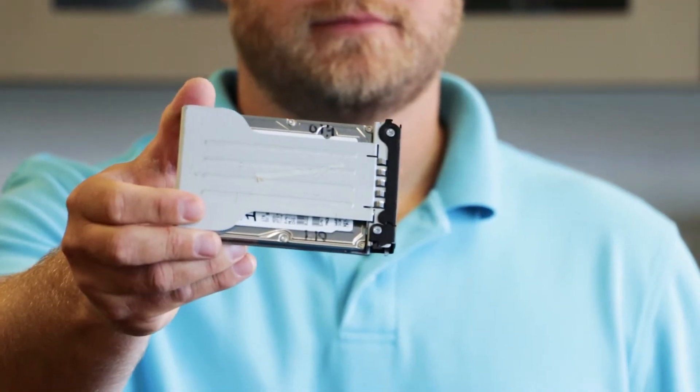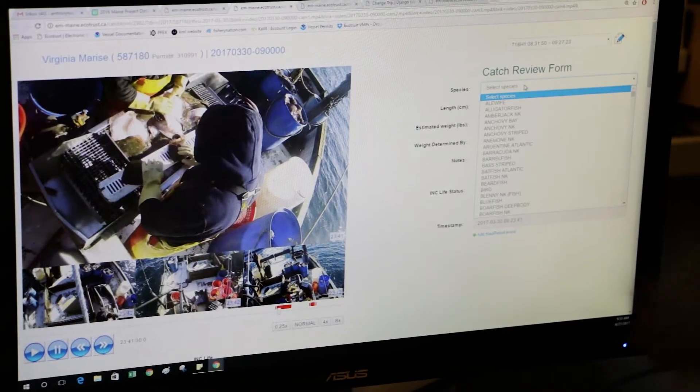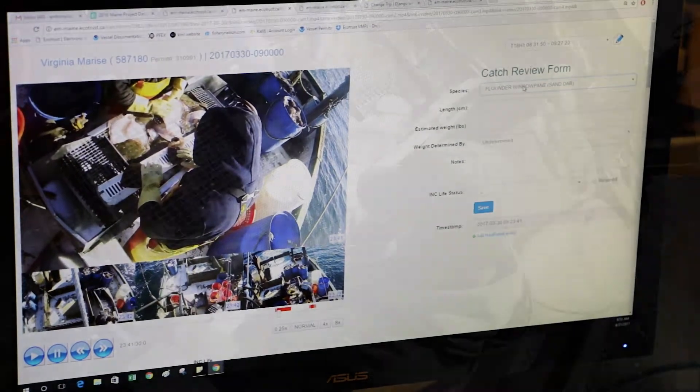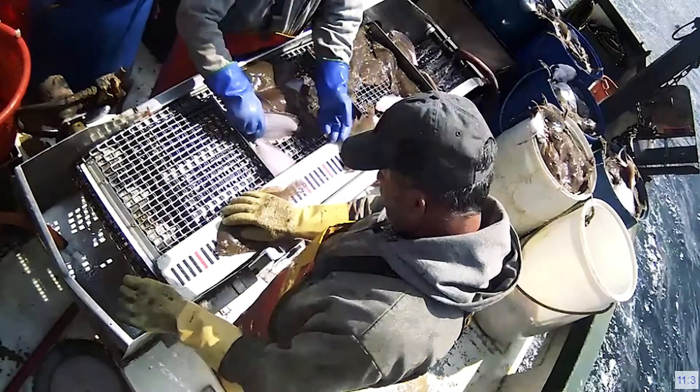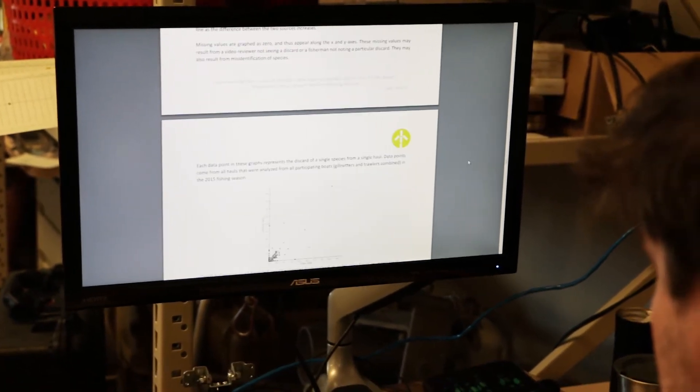That is all recorded onto a hard drive. That hard drive is sent to the lab here at GMRI. A trained reviewer looks at that data and actually gets individual lengths for fish. Those lengths are then translated into a weight, and then that weight is combined into a summary report, and we send that to NOAA Fisheries, and NOAA Fisheries uses that to manage the fishery.